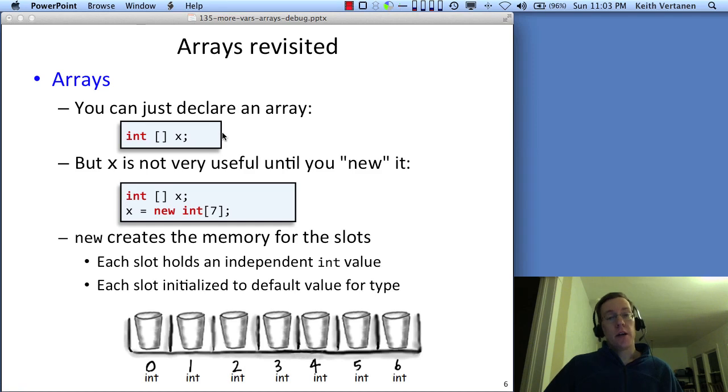You can just declare an array. Here is an example of just declaring an array called x that can hold integers. But at this point, we haven't created the array. There is no memory associated with that variable. There are no slots in which to put values. If you try and do that, it's not going to work. You can split it up and do it in two lines. You can declare and then create it in a separate line if you like. And you can kind of think of an array as a tray of cups.